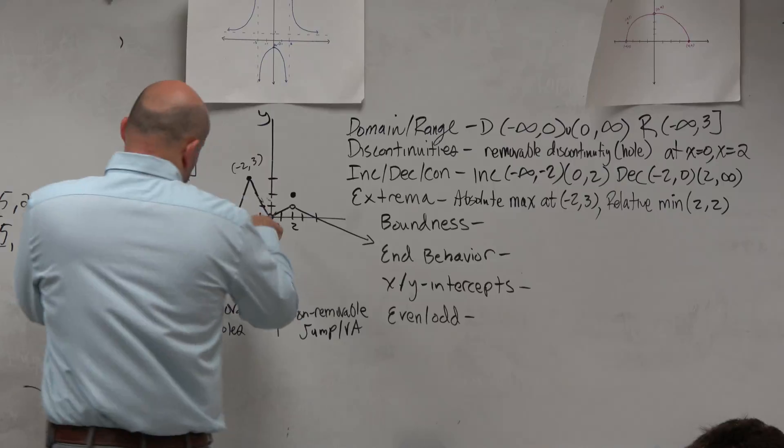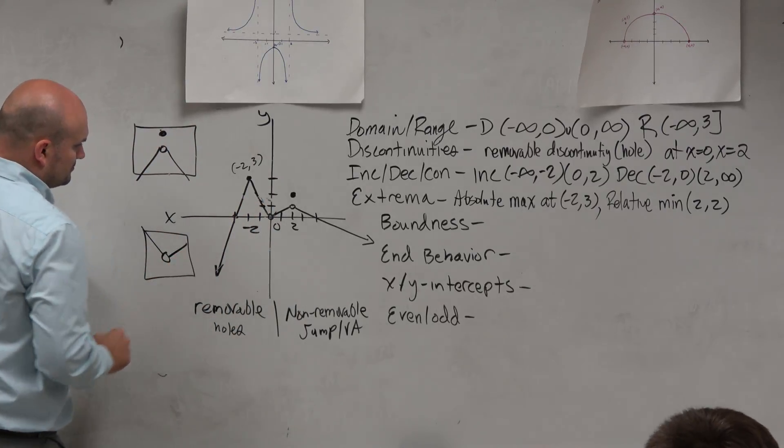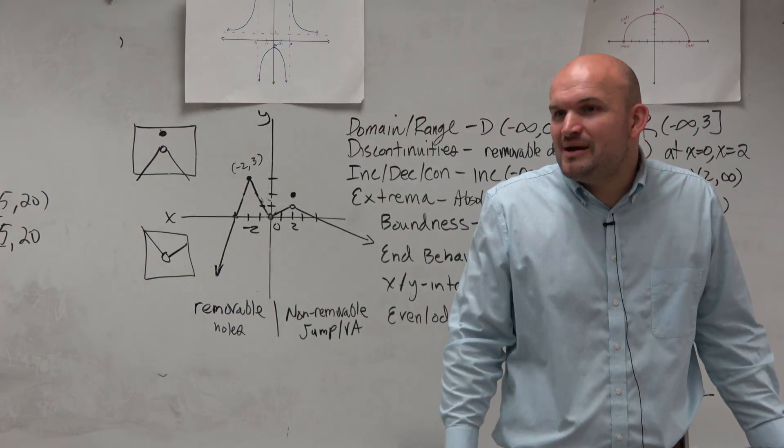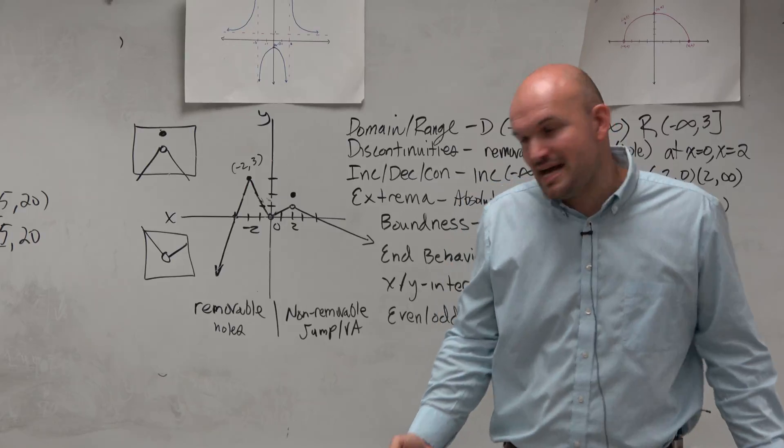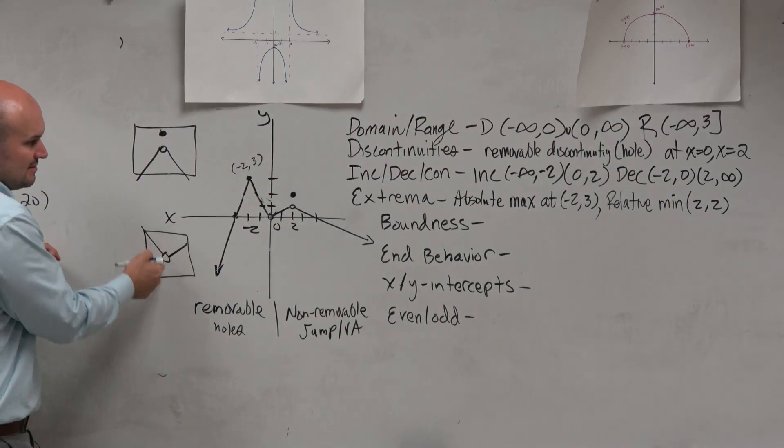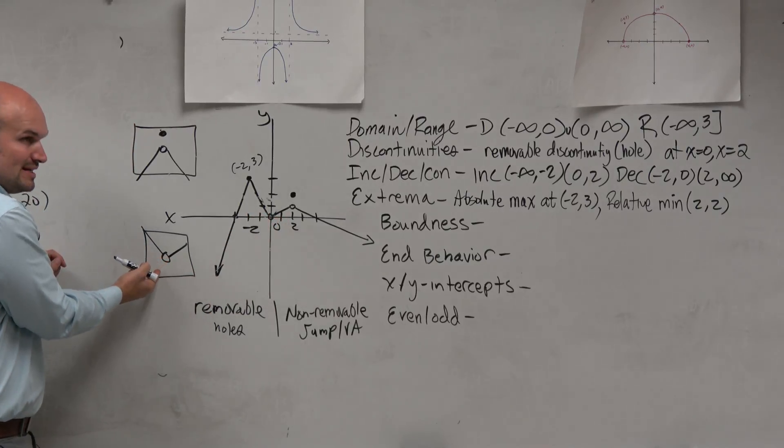So if I zoom in here on this one, it's going to look something like this. Now this looks like a minimum, right? The only problem is we have a hole there. So there's actually not a coordinate point. Like this is not actually a point. This point, negative or where is it? 0, 0. That's actually not a point.